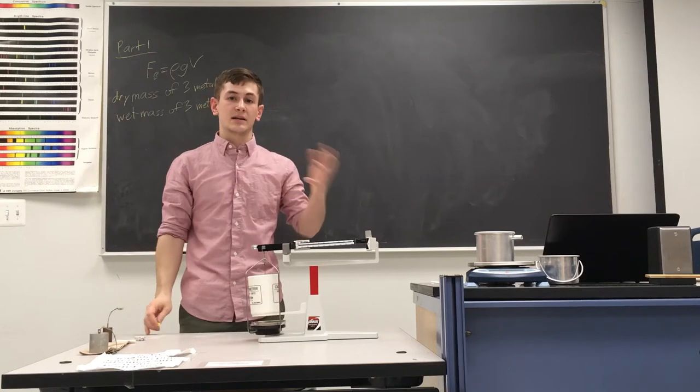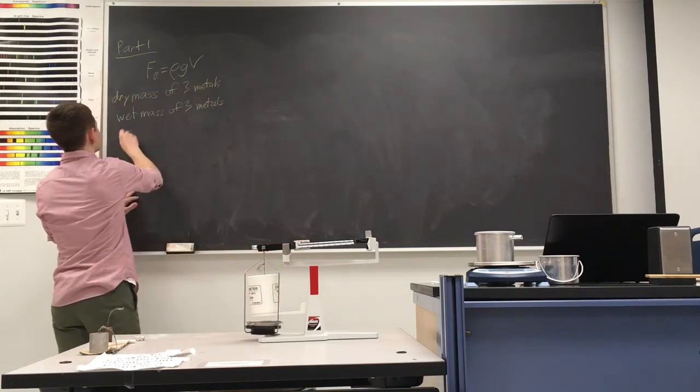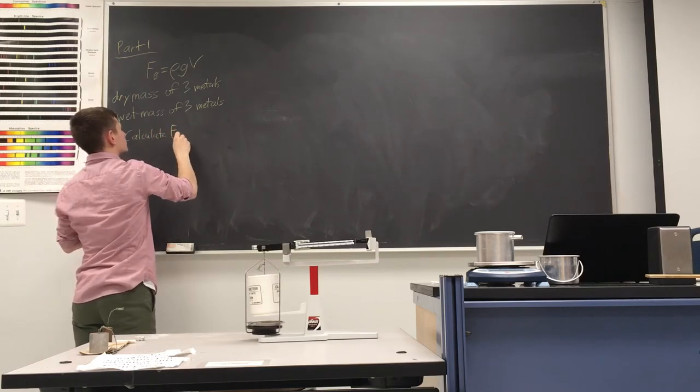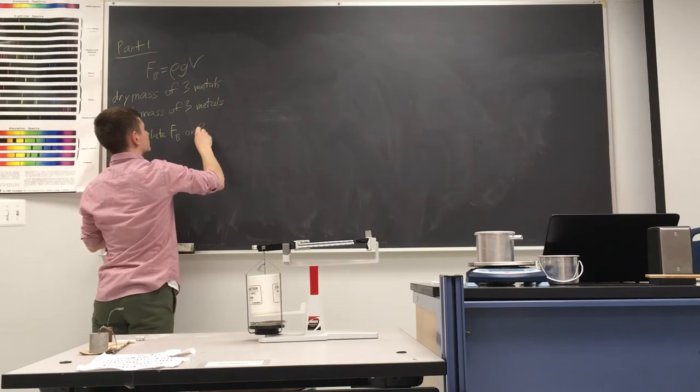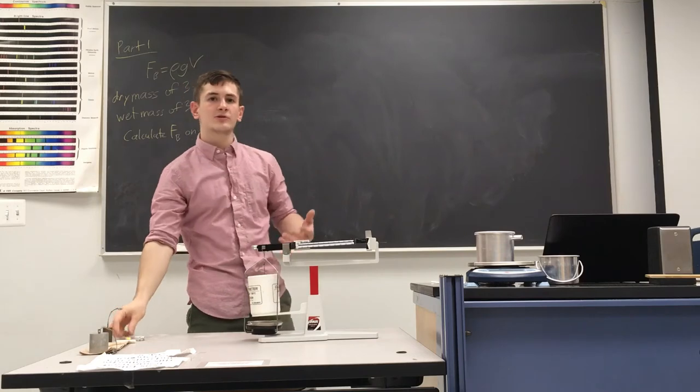Now, using the wet mass and the dry mass, we can figure out the buoyant force on the object. Once we calculate the buoyant force on them, it's time for part two.